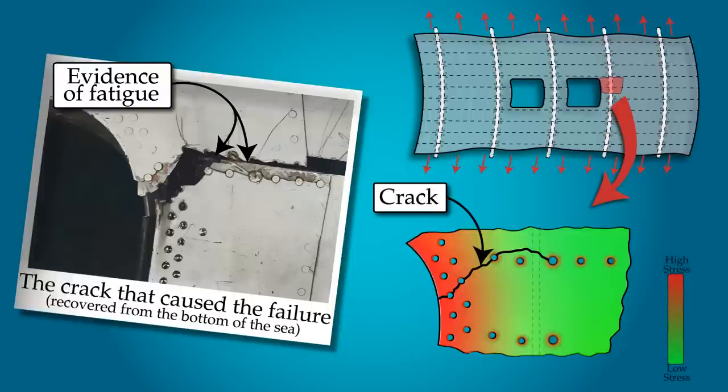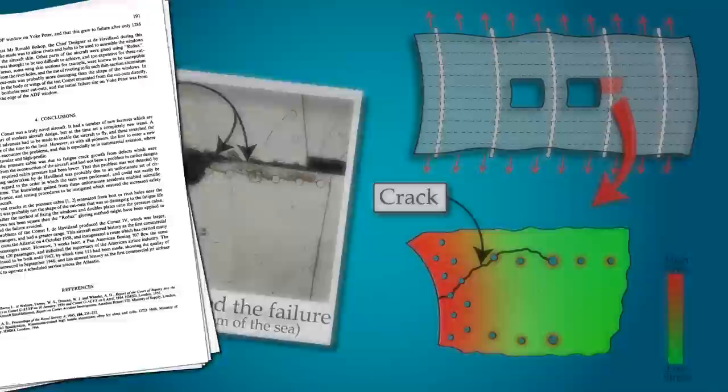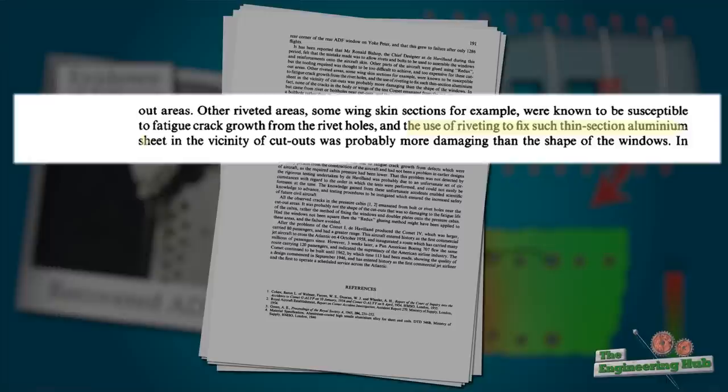A 1997 study stated that the use of riveting to fix such thin section aluminum sheets in the vicinity of cutouts was probably more damaging than the shape of the windows.